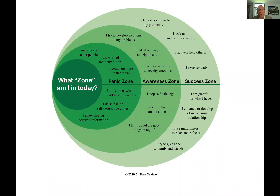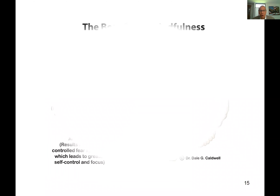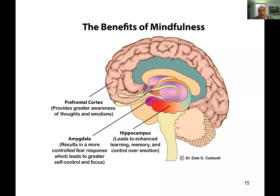The idea is to move from the awareness zone to the success zone, where people are grateful for what they have, seeking positive information, implementing solutions, and using mindfulness to relax and refocus. Mindfulness is really about putting cell phones away and being present in the moment, feeling your breath flow through your body. Neuroscientists talk about how mindfulness gives the prefrontal cortex greater awareness of thoughts and emotions, the amygdala greater control of emotions, and the hippocampus enhanced memory — all from about 15 minutes of mindfulness a day.